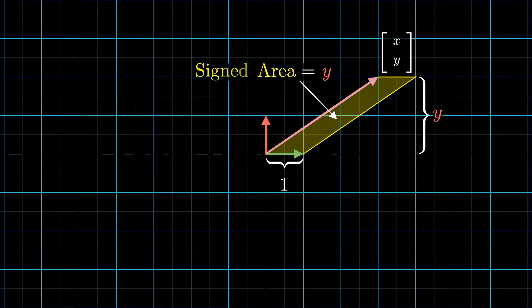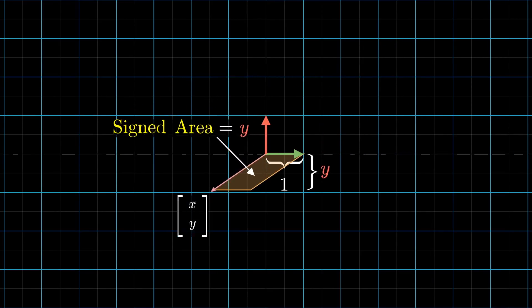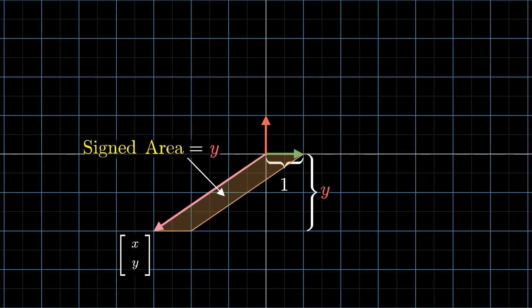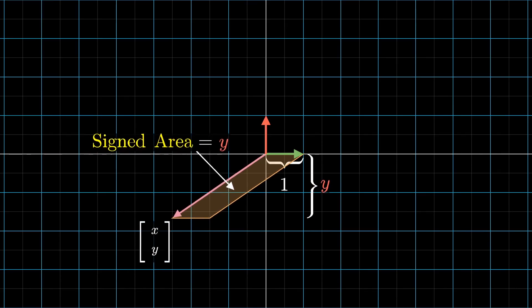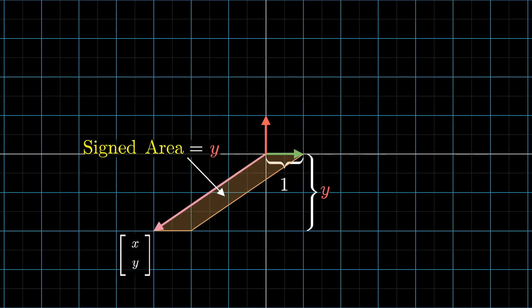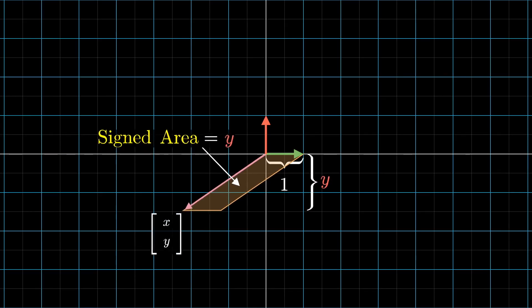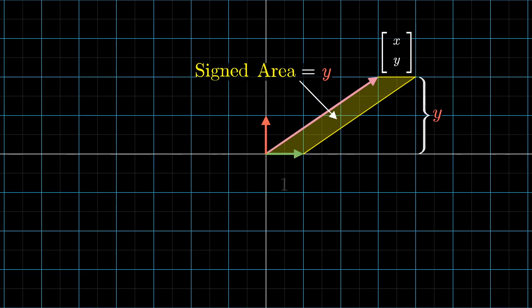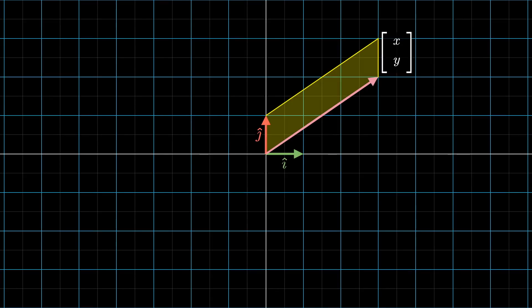And actually, to be a little more accurate, you should think of this as the signed area of that parallelogram, in the sense described in the determinant video. That way, a vector with a negative y coordinate would correspond to a negative area for this parallelogram, at least if you think of i hat as in some sense being the first out of these two vectors defining the parallelogram. And symmetrically, if you look at the parallelogram spanned by our mystery input vector and the second basis, j hat, its area is going to be the x coordinate of that mystery vector. Again, it's a strange way to represent the x coordinate, but you'll see what it buys us in a moment.